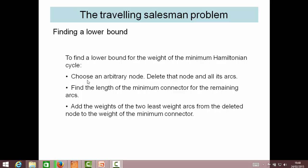This is the method. We choose a starting node, or in the question you may be given one. We delete that node and all of the arcs that go to it. We then find the length of the minimum connector for what's left of the graph, and we add the weights of the two least arcs that go to the deleted node. This then gives us our lower bound.